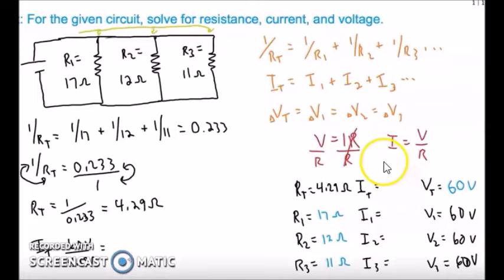We have V = IR, the Ohm's law, and I = V upon R. Just put the value of VT divided by RT, which is 60 volts divided by 4.29 ohms, which was calculated by us, and we are going to get the total current which is 13.9 amperes.